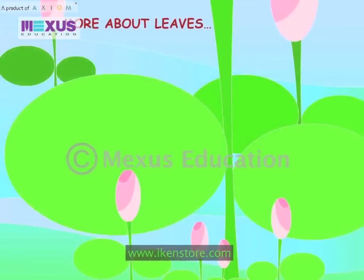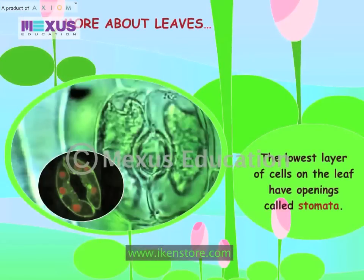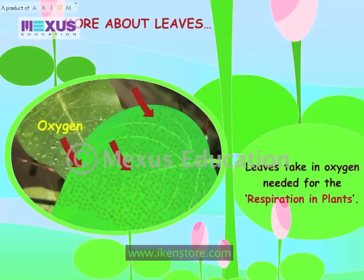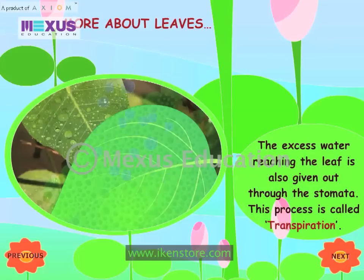More about leaves. The lowest layer of cells on the leaf have openings called stomata. Air enters and exits through the stomata. Leaves take in oxygen needed for respiration in plants. The excess water reaching the leaf is also given out through the stomata. This process is called transpiration.